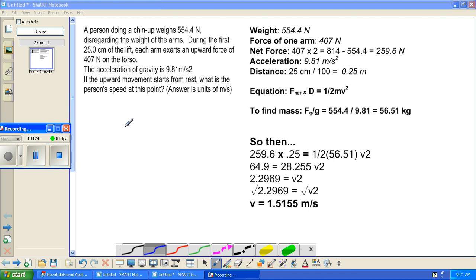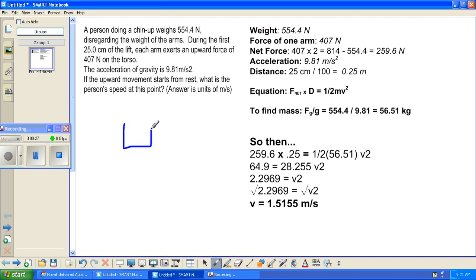So, our diagram is that our box is our person. And the arrow downward is his weight, which is 554.4 newtons. He also has two arms, giving an upward force of 407 newtons.